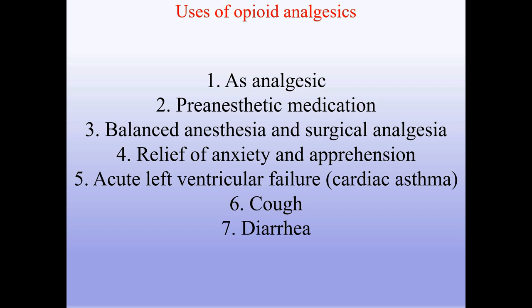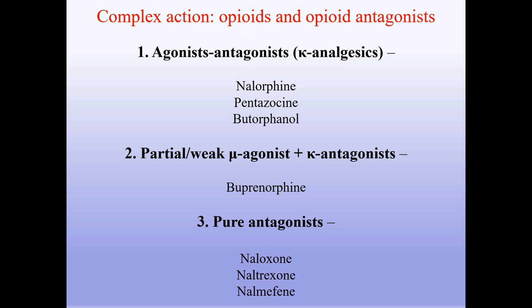Uses of opioid analgesics: as analgesic, pre-anesthetic medication, balanced anesthesia and surgical analgesia, relief of anxiety and apprehension, acute left ventricular failure and cardiac asthma, cough, and diarrhea. Complex action opioids and opioid antagonists are classified into three groups: (1) agonist-antagonists — kappa-analgesics: nalorphine, pentazocine, and butorphanol; (2) partial or weak mu-agonist plus kappa-antagonist: buprenorphine; (3) pure antagonists: naloxone, naltrexone, nalmefene.